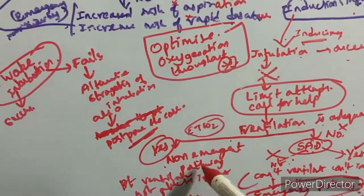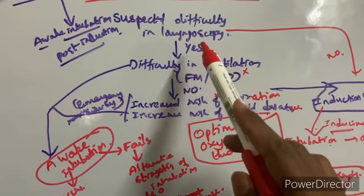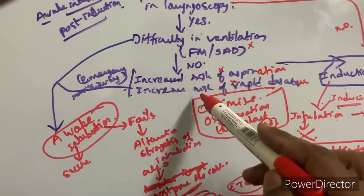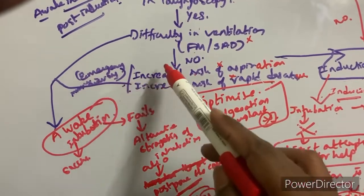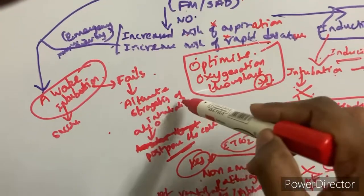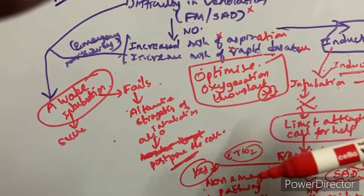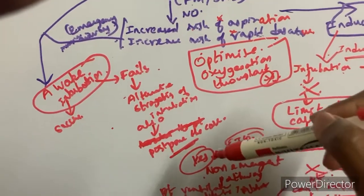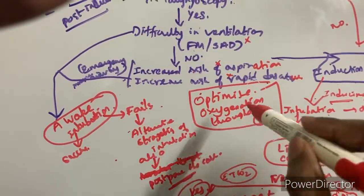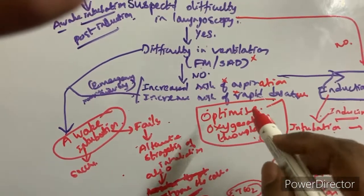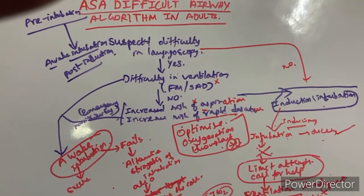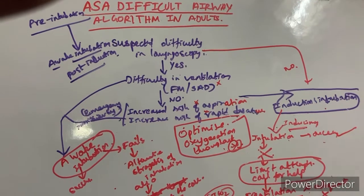If the patient has suspected difficult laryngoscopy with difficulty in ventilation, increased risk of aspiration, increased risk of desaturation, and emergency airway requirement, attempt awake intubation. If successful, proceed. If it fails, try Plan B or Plan C alternative strategies. If those also fail, postpone the case. Throughout the entire procedure, the main goal is to optimize oxygenation. This concludes the ASA difficult airway algorithm for adults; pediatric and other difficult airway situations will be covered in upcoming videos.